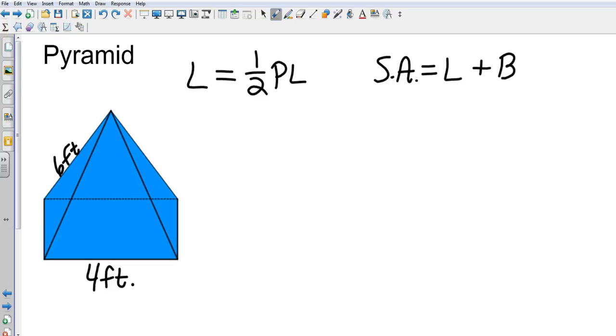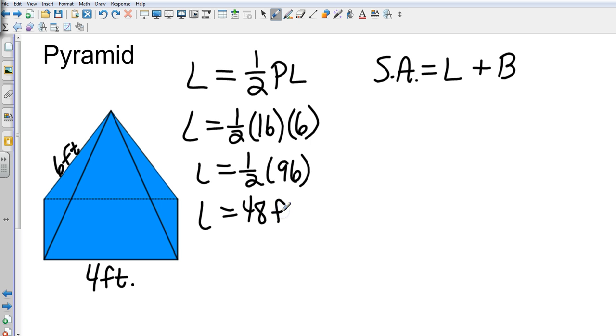Pyramid. I went ahead and put lateral area and surface area up there at the same time. The lateral area is going to be one half of the perimeter of the base. And this is going to be a regular square pyramid with a base that's a square. And so that's going to be one half of 16. And L stands for the slant height. So in this case, that is 6. And so we're going to do 16 times 6 is 96, and one half of 96 is 48. So that's going to be 48 square feet as our lateral area. And this is example number one on page 839.